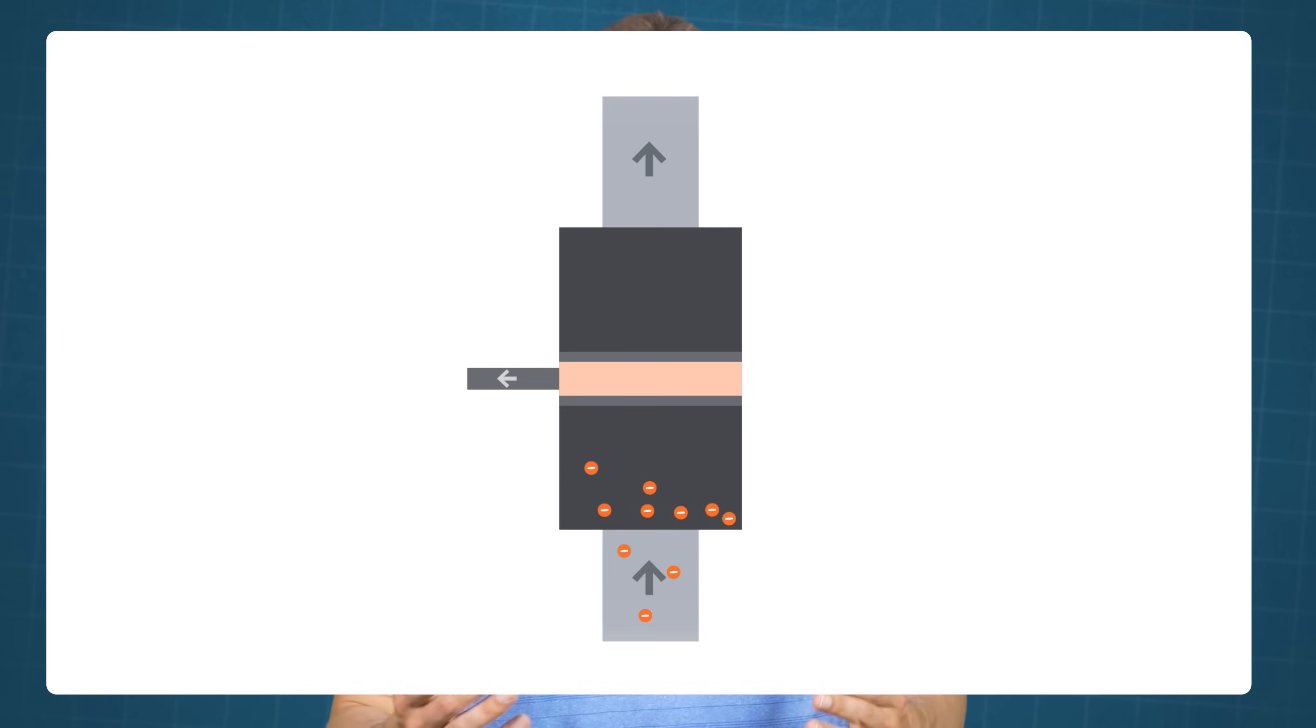the emitter region is heavily doped. So in an NPN transistor, the N-type emitter region has a very high density of free electrons, while in a PNP transistor, the P-type emitter region has a very high density of holes.